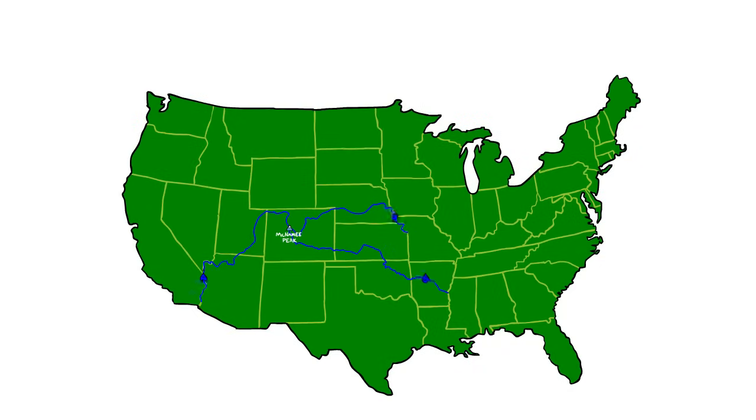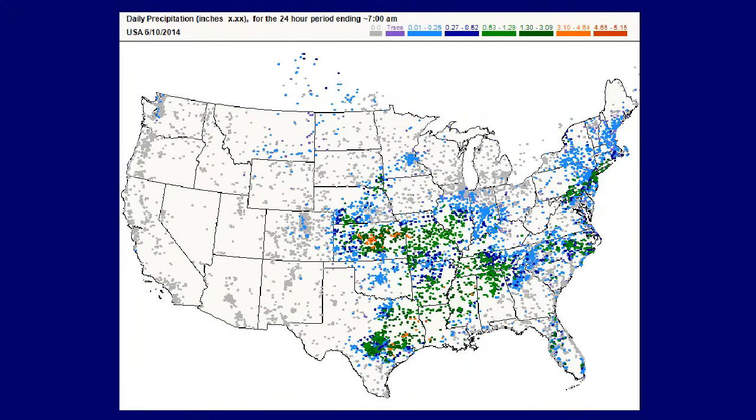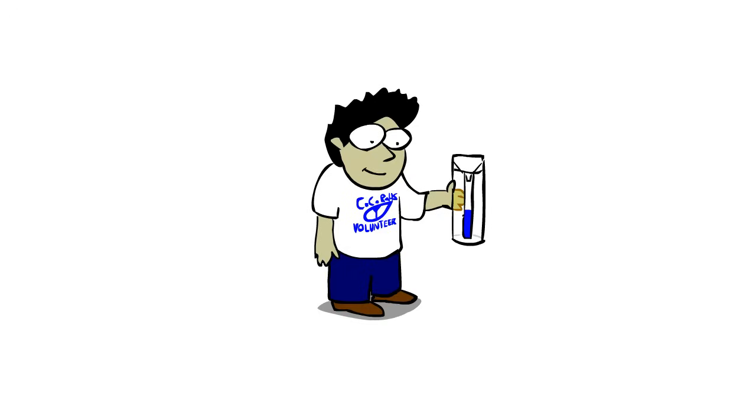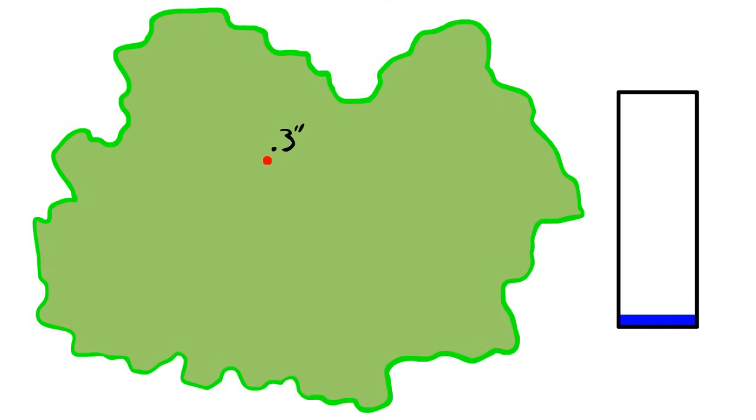This is why having lots of precipitation measurements over a wide area is so important. At CoCoRaHS, volunteers just like you contribute precipitation data that allows water managers to better calculate how much water they can expect in their basin. While a single measurement of 0.3 inches doesn't seem like much, when it's averaged and multiplied over a large area with all the other data, it can start to add up quickly.